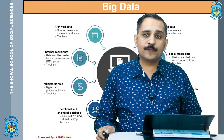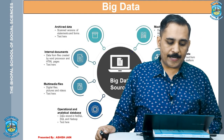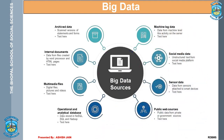How do you obtain different big data from different sources? We have archive data comprising scanned versions of statements, forms, and documents. We have internal documents in different formats. We have multimedia files of large size — digital files, pictures, videos, text, etc. We have operational and analytical database data, which is also very voluminous. We have machine log data — details of logs generated in different machines like servers. We have social media data, which is itself a very large amount of data. Then sensor data. Apart from this, we have public web resources such as government data.